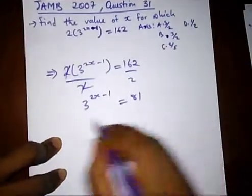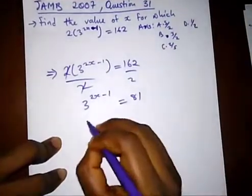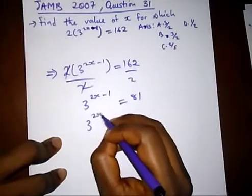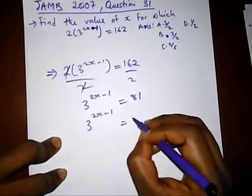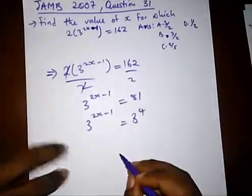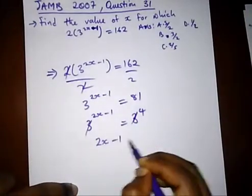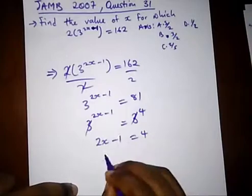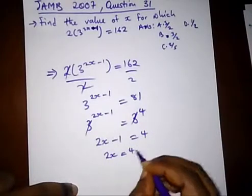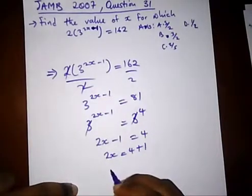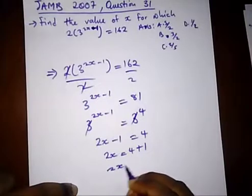3 into 81 is 4 times, so this will cancel and we're left with 2x minus 1 equal to 4. So 2x equals 4 plus 1, and we're left with 2x equals 5.